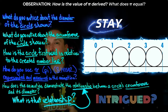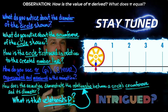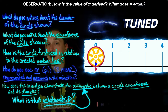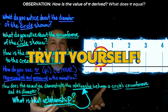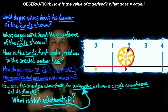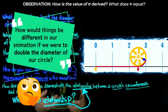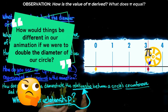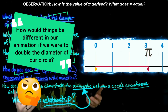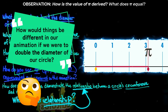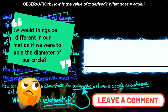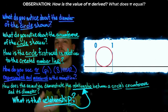Stay tuned for an upcoming video where we're going to break it all down in further detail. In the meantime, why not try reconstructing this animated GIF yourself? How would things be different in our animation if we were to double the diameter of our circle? If you try it yourself, be sure to share your work down in the comments and help your fellow math learners out.